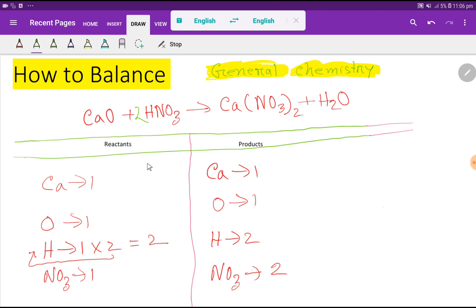Right, so here already you have it. Then nitrate polyatomic ion will be two, so let me update the number of nitrate.